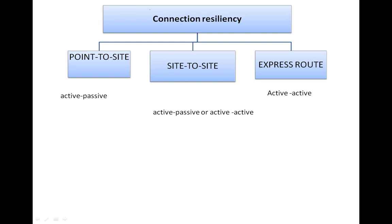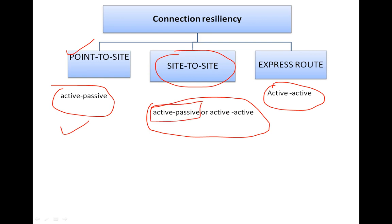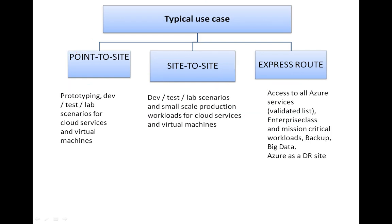For connection resiliency: Point-to-Site is active-passive. Site-to-Site can be either active-passive or active-active. ExpressRoute is active-active only, meaning both sides remain active at all times.